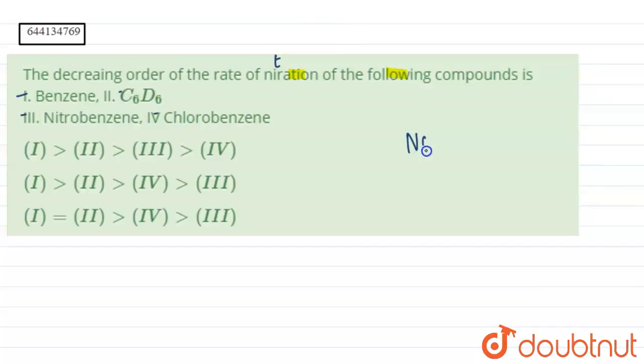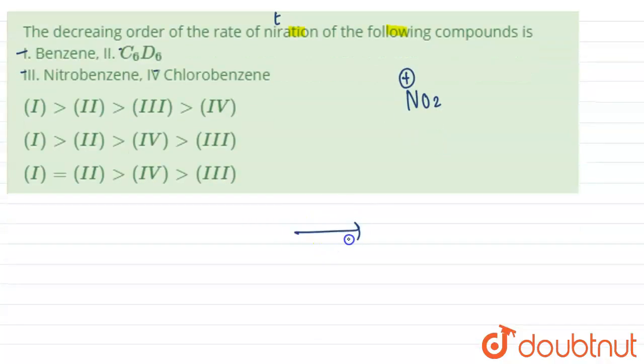Nitration means addition of the electrophile which is NO2 positive, and generally for nitration our reagent is concentrated HNO3 plus concentrated H2SO4.